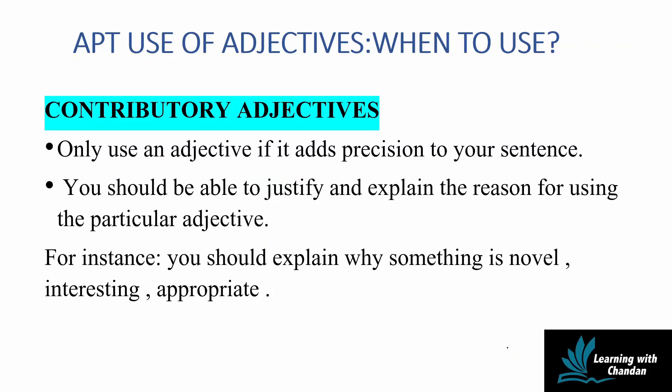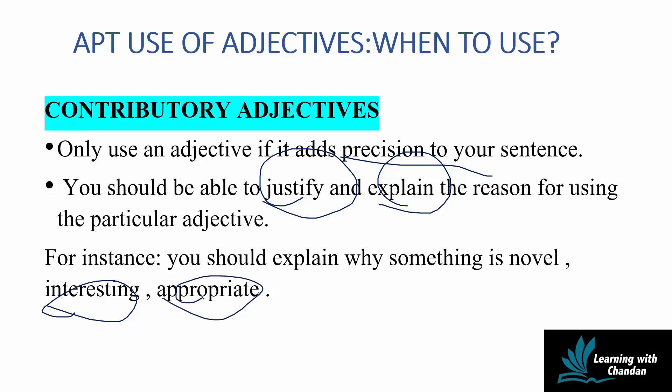Now we will learn when and how to use an adjective. Sometimes adjectives do not lead to any value addition to your research, so you need to check whether the adjective you have used is contributory or unnecessary. Only use an adjective if it makes your argument sharper and more concise. You should also be able to justify its relevance — for example, if you use 'interesting,' you should explain why the finding is interesting; if you use 'appropriate,' you should explain the relevance of that method.